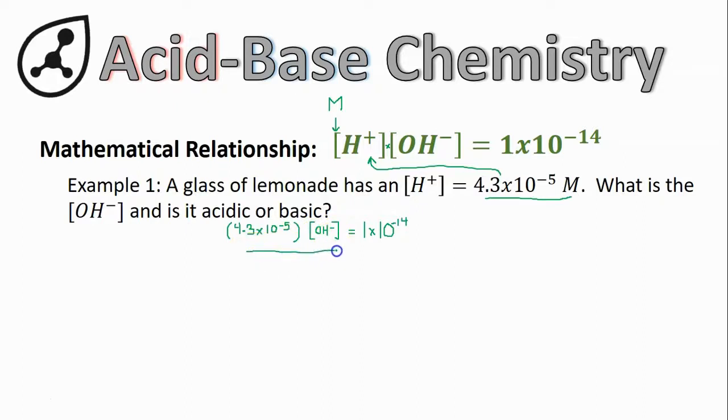To do that, since this is just multiplication, I'll simply divide both sides by the 4.3×10^-5. Dividing both sides by this value causes it to cancel out here, leaving behind my desired result, which is simply the OH- concentration equal to these two quantities divided on the other side. So in the final step, we just have to divide 1×10^-14 by 4.3×10^-5.